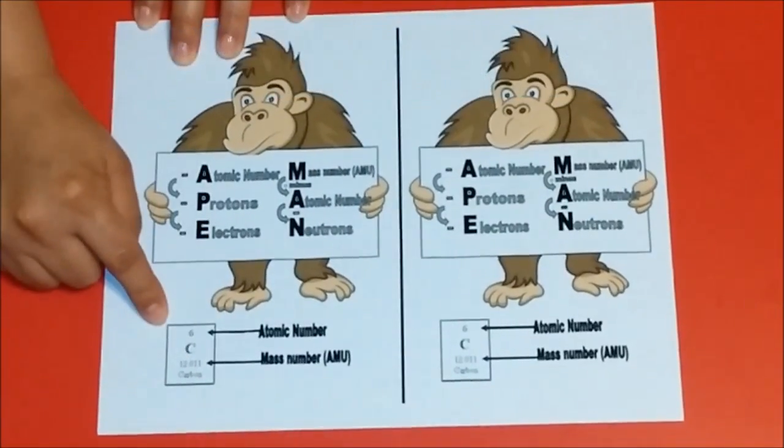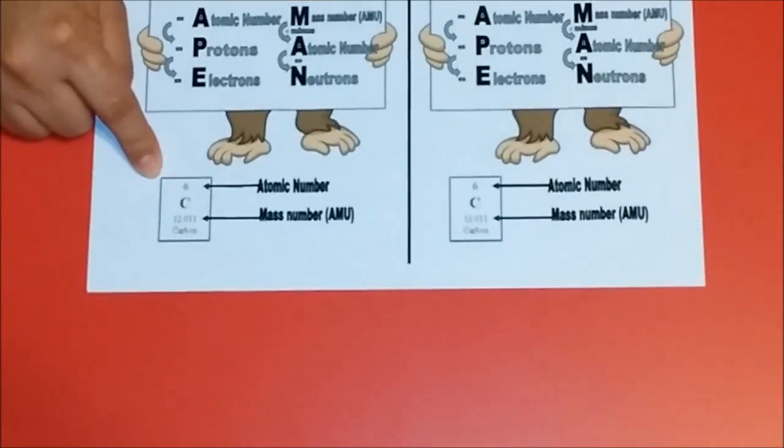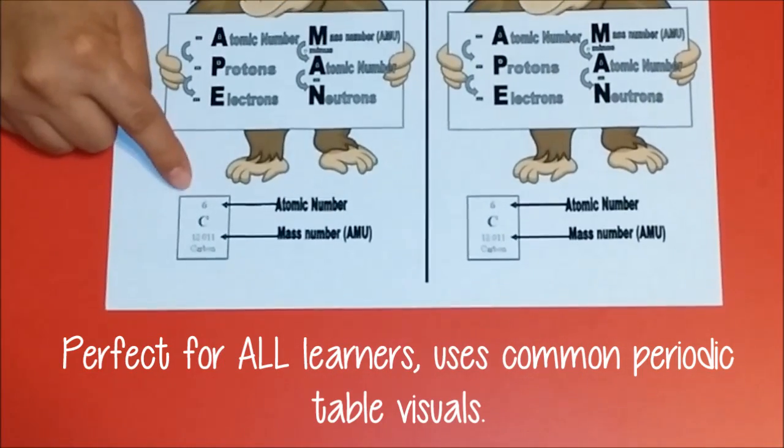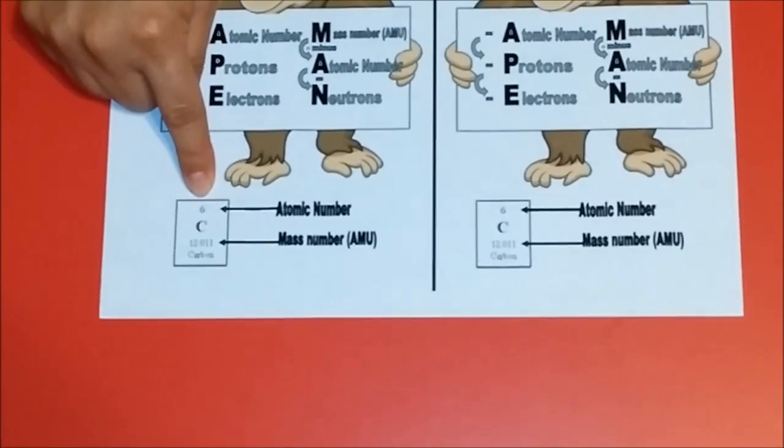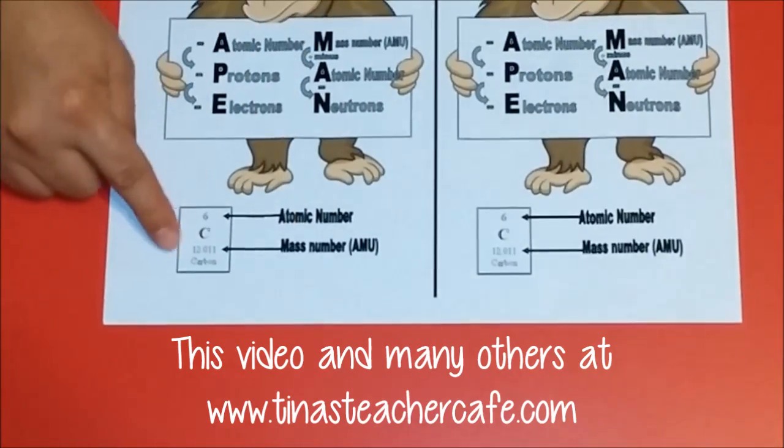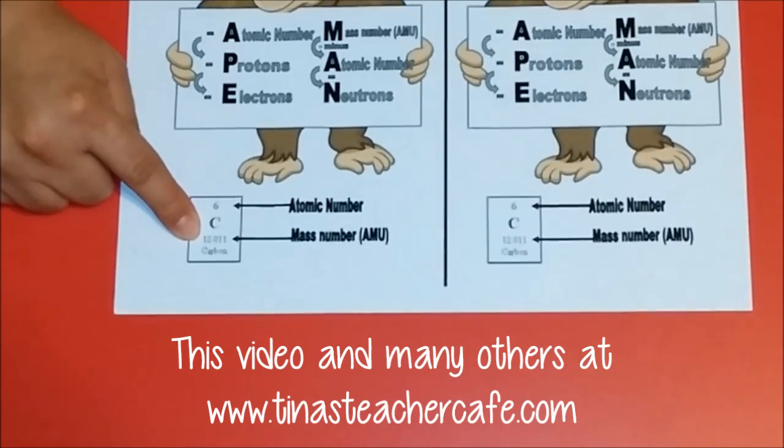And then of course, just like what you would find in any periodic table standard in school, you have the example, carbon. The atomic number is the smaller number on top. The atomic mass unit, or the mass number, is the one with the decimal at the bottom.